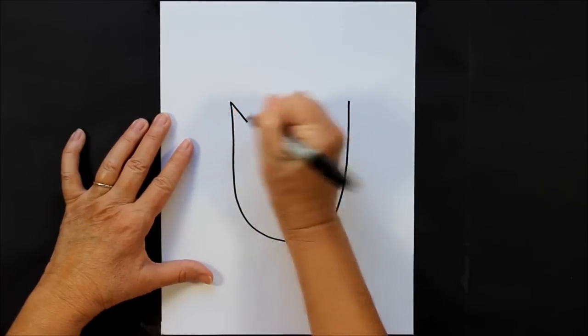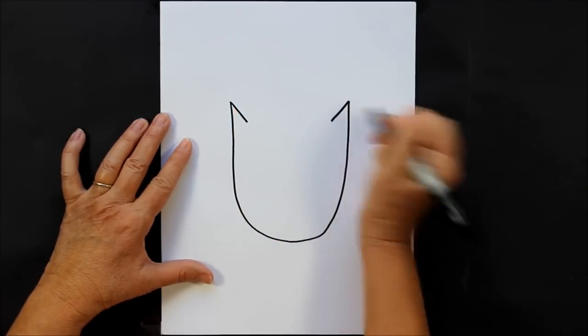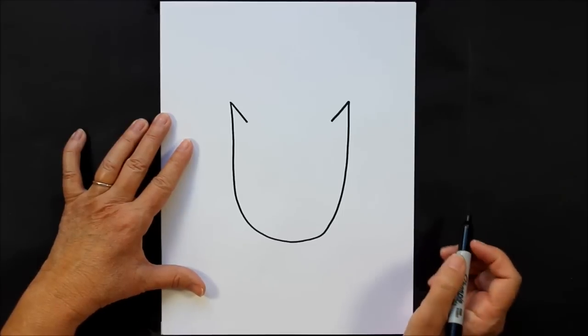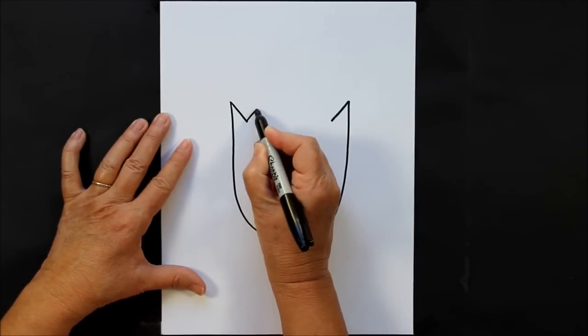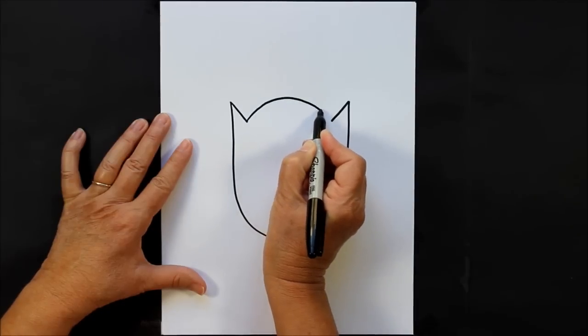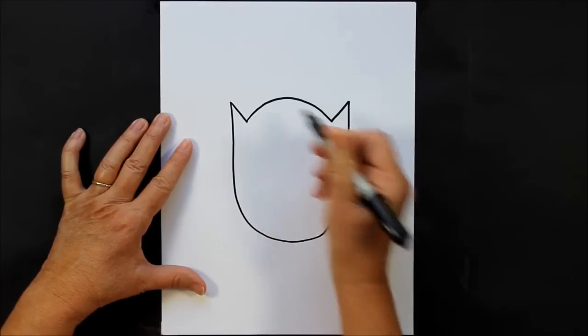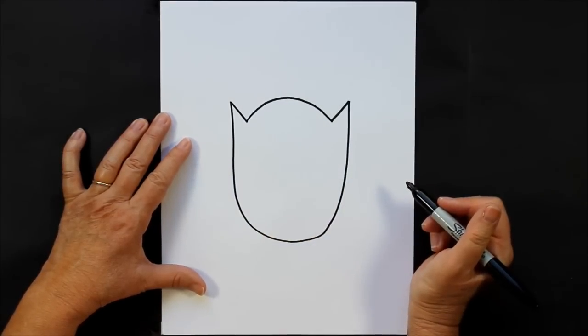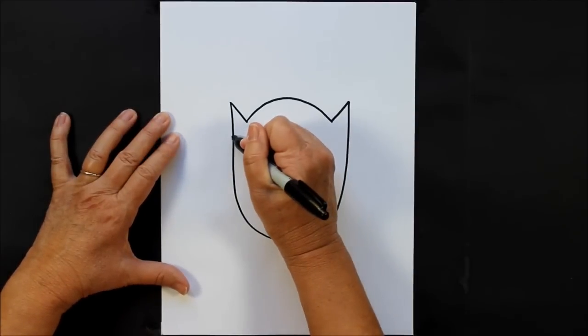Those are going to be your owl ears. Now we're going to connect those two upside down V's with a curved line, just like that. Let's give our owl some wings.